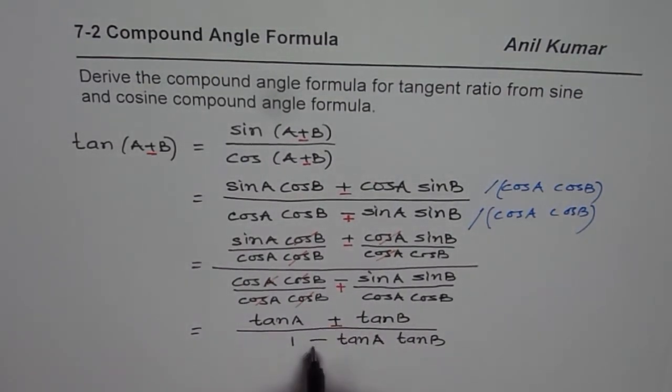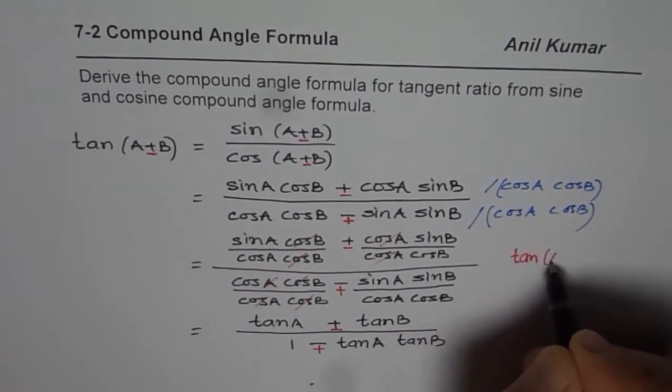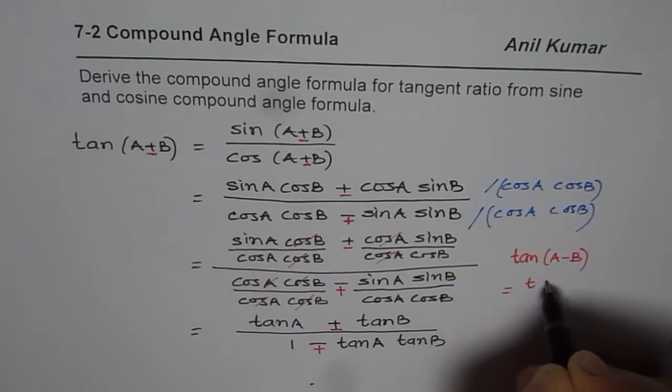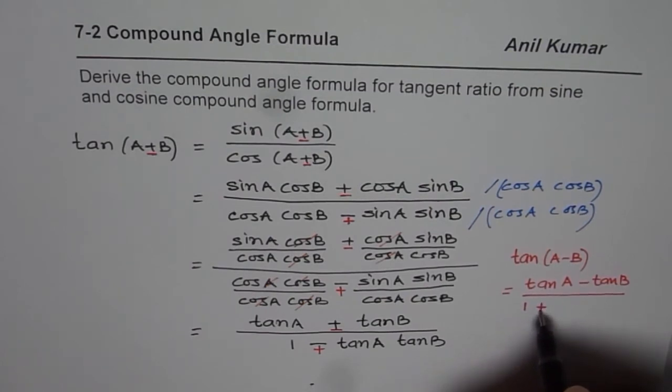So, this becomes negative, this becomes positive. And then, you get your formula, which is tan of A minus B equals to tan A minus tan B, divided by 1 plus tan A tan B.